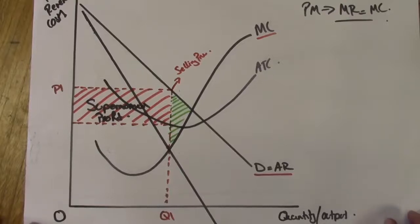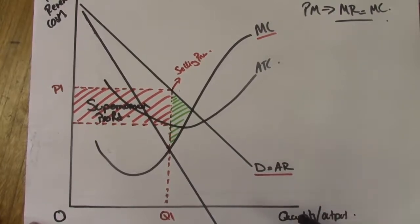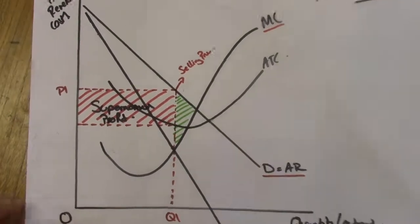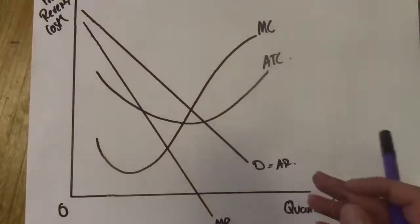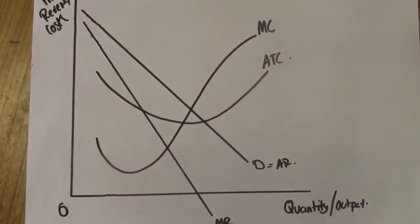This diagram can show so much and I would really strongly encourage you to memorize it and use it effectively within your answers. It can show both supernormal profits, it can show a loss of supernormal profits, and it can also show the allocatively efficient point, which is what I'm interested in looking at now.